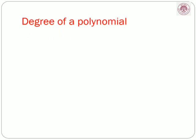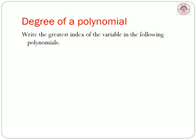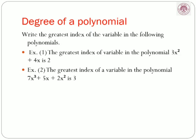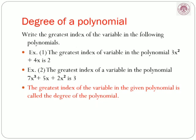Next is the degree of a polynomial. We write the greatest index of the variable. Example 1: In the polynomial 3x squared plus 4x, the index of the first term is 2 and the second term is 1, so the greatest index is 2. Example 2: In the polynomial 7x cubed plus 5x plus 2x squared, the indices are 3, 1, and 2, so the greatest index is 3.